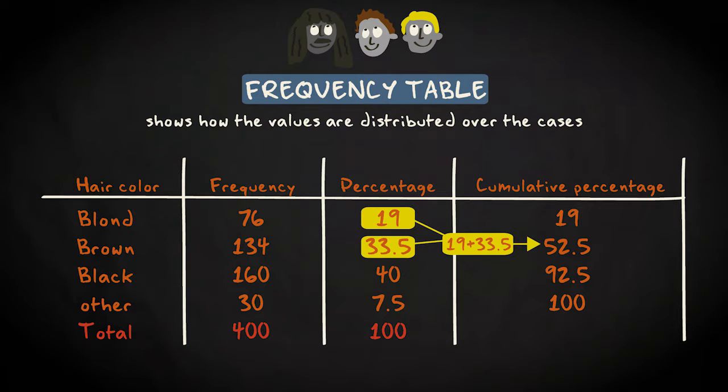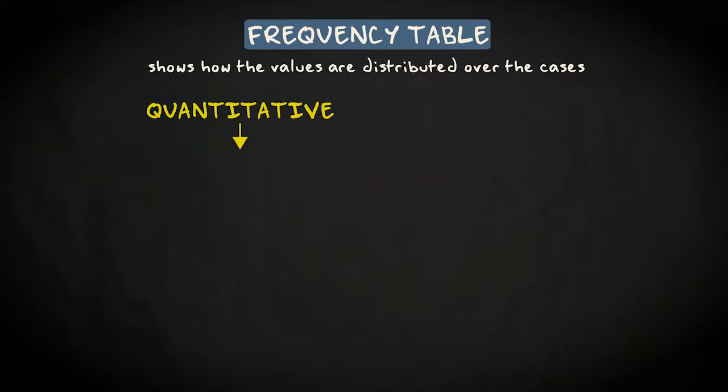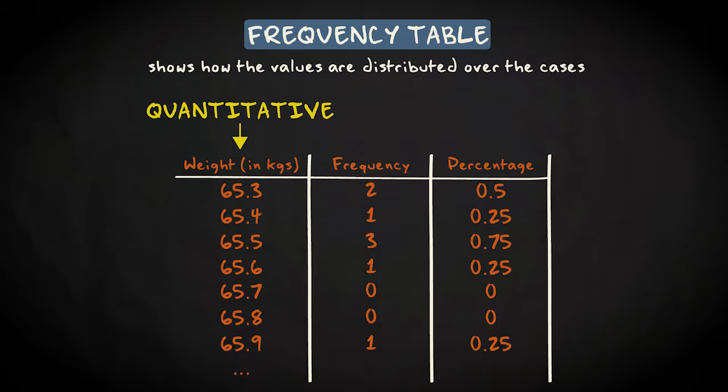In this example, we talked about a categorical variable, hair color. What if we are dealing with a quantitative variable? Take weight for instance. It doesn't make sense to compute percentages for every specific value of weight, because then we would end up with a countless number of categories.